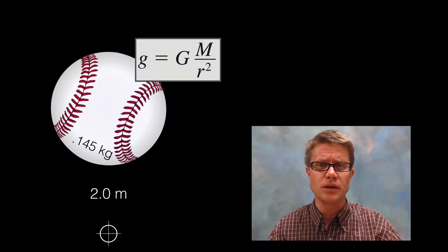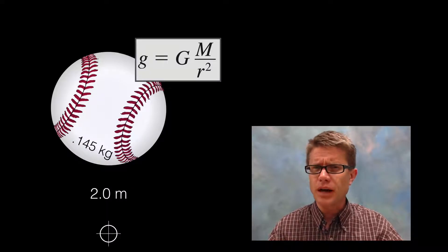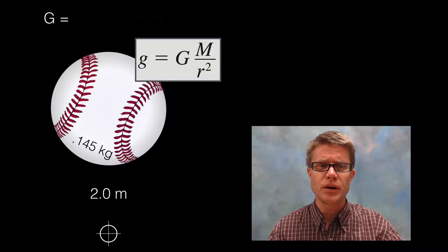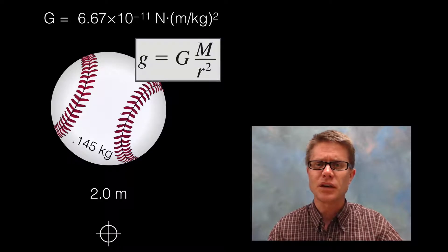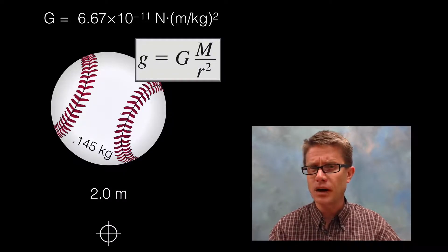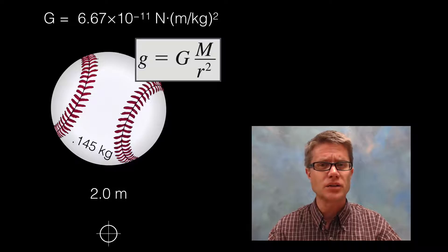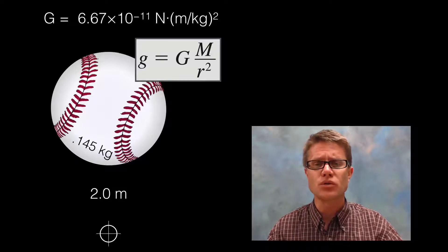You maybe have forgotten what big G is. So we'll put that right up there: 6.67 times 10 to the negative 11th. You may want to pause the video right now and try to solve this problem. Or you could just watch me do it.